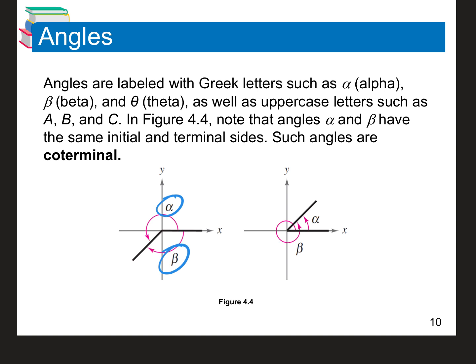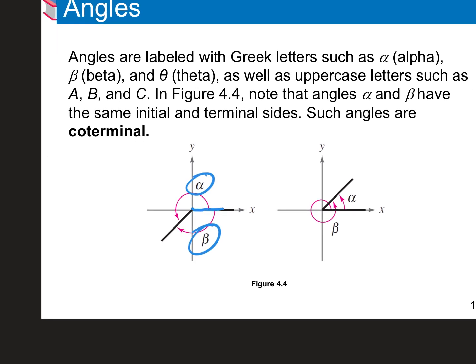If I start at the initial side and go positively upward and end here, you can see the angle formed in blue. If I start at the initial side and go negatively in this direction, I form a different angle — but you end up in the exact same spot. These two angles, alpha and beta, the blue one and the red one, are called coterminal. They share initial and terminal sides — they share where they started and where they end.